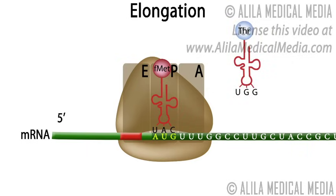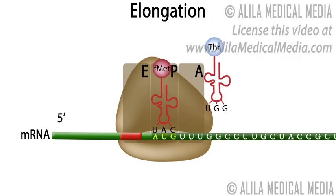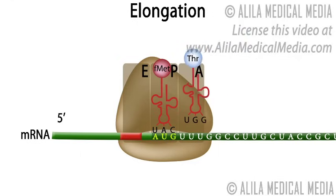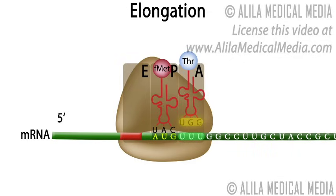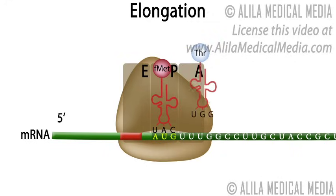Elongation. A new tRNA carrying an amino acid enters the A site of the ribosome. On the ribosome, the anticodon of the incoming tRNA is matched against the mRNA codon positioned in the A site. During this proofreading, tRNAs with incorrect anticodons are rejected and replaced by new tRNAs that are again checked.